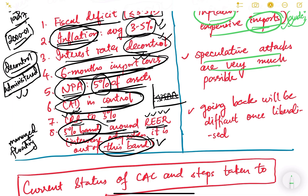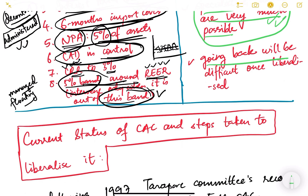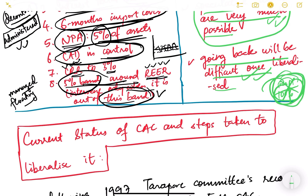Speculative attacks are also very much possible. Furthermore, once you liberalize and open something, it is very difficult to close it back. If a policy of 100% liberalization is rolled out, it is very difficult to reverse because global players are involved and investments have taken place. Going back becomes extremely difficult, so any such policy decision must be considered very carefully.